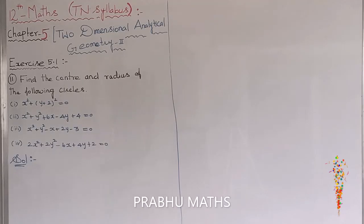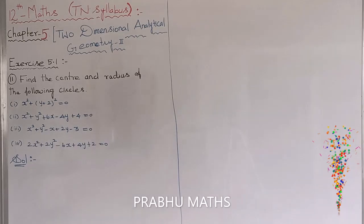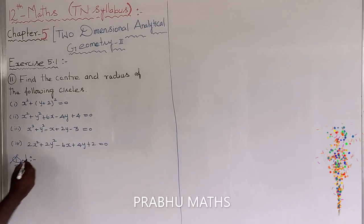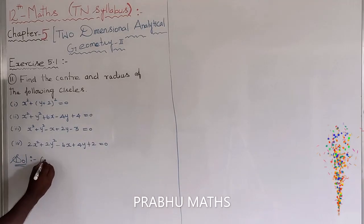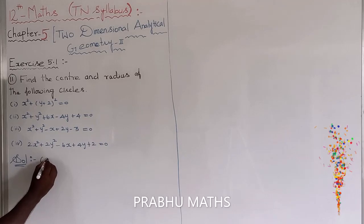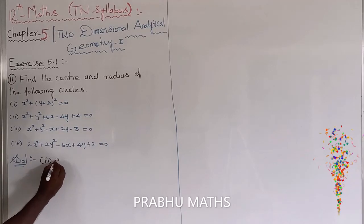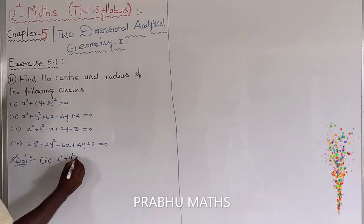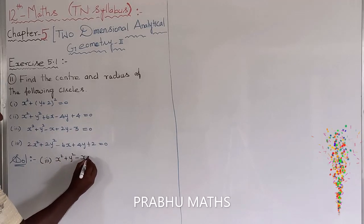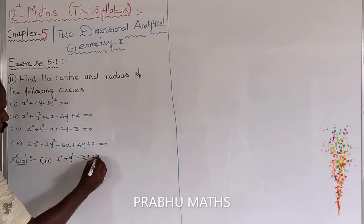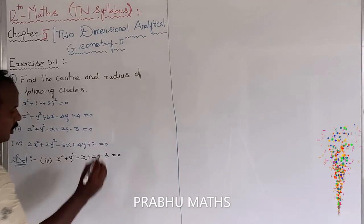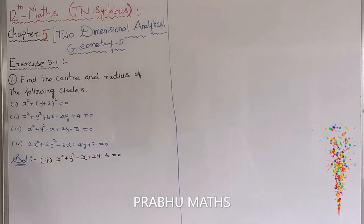X is 5.1, third subdivision. The equation given is: x squared plus y squared minus x plus 2y minus 3 equal to 0.